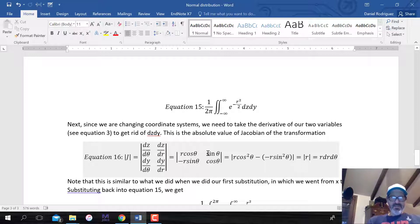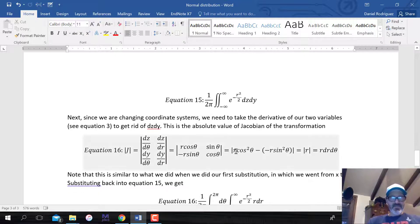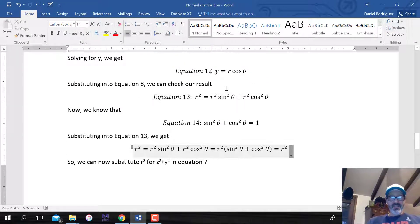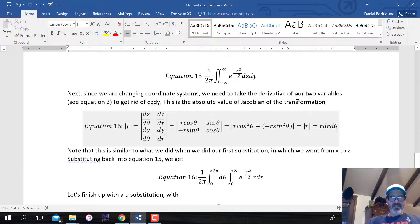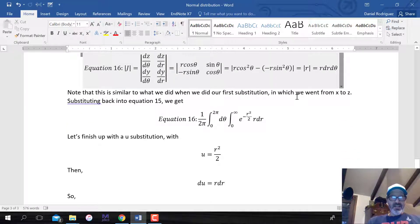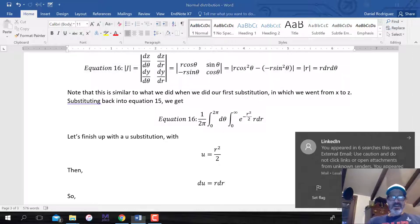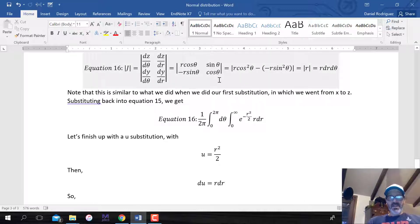We're going to take the absolute value of the Jacobian. When we made the conversion from x to z, we had to take the derivative. We have to be able to get rid of this dz dy. We use this equation for the Jacobian, which is the absolute value of the Jacobian, the determinant of this matrix. The determinant, you multiply cross this way, and then subtract the other cross product. First, we need the dz. We'll go back to our equations that we had before and take the derivatives with respect to theta and then r.